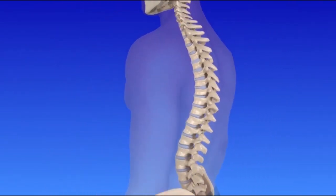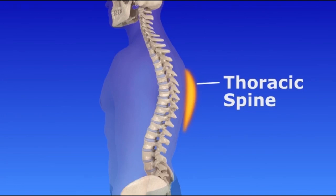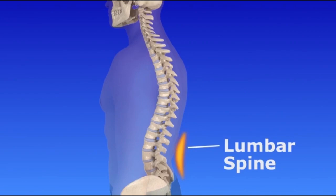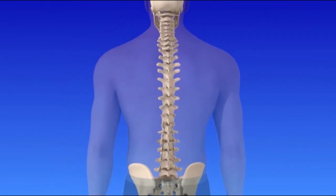A healthy spine has natural front to back curves. The curve in the neck area is called the cervical spine. The second curve forms a thoracic spine located in the upper back. And the third curve forms the lumbar spine located in the lower back. A healthy spine appears straight from a front or back view.